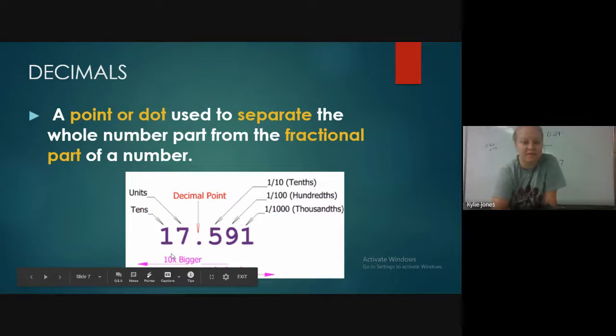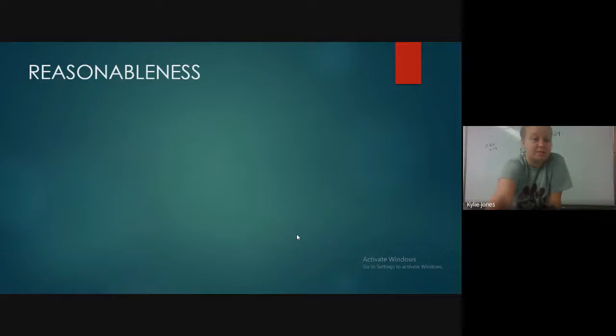So there's a good example, your place value here. So the 7 is in the ones place, the 1 is in the tens, and then you have your decimal. The 5 is in the tenths, the 9 is in the hundredths, and the 1 is in the thousandths. The th at the end is what makes it the part of the decimal, not the whole number. So keep that in mind. Our next part, reasonableness.